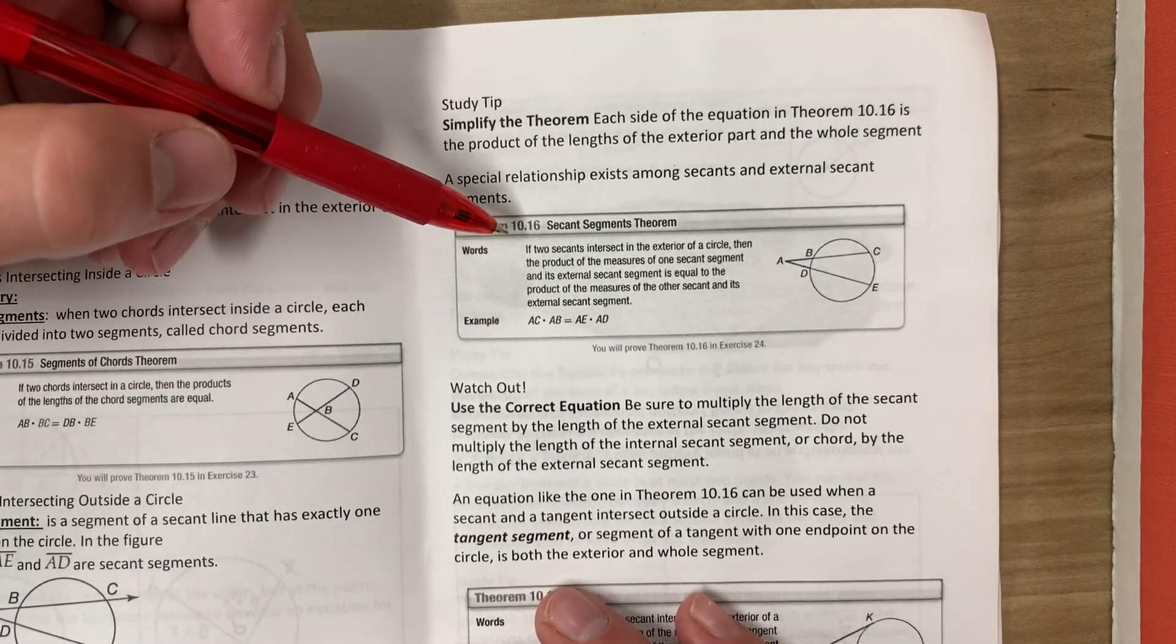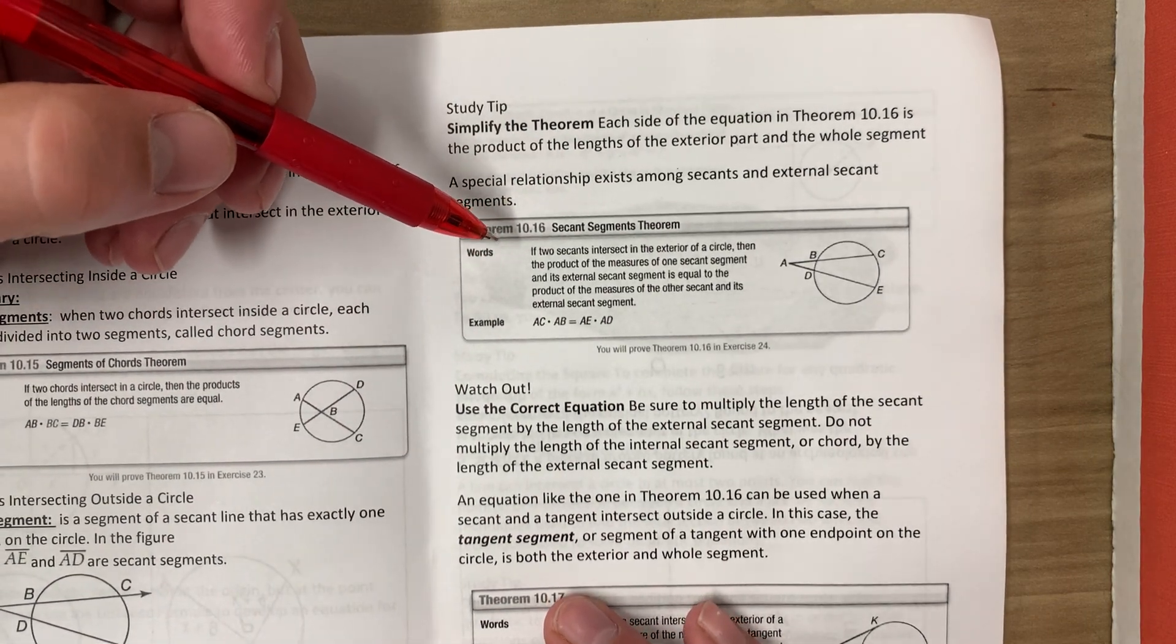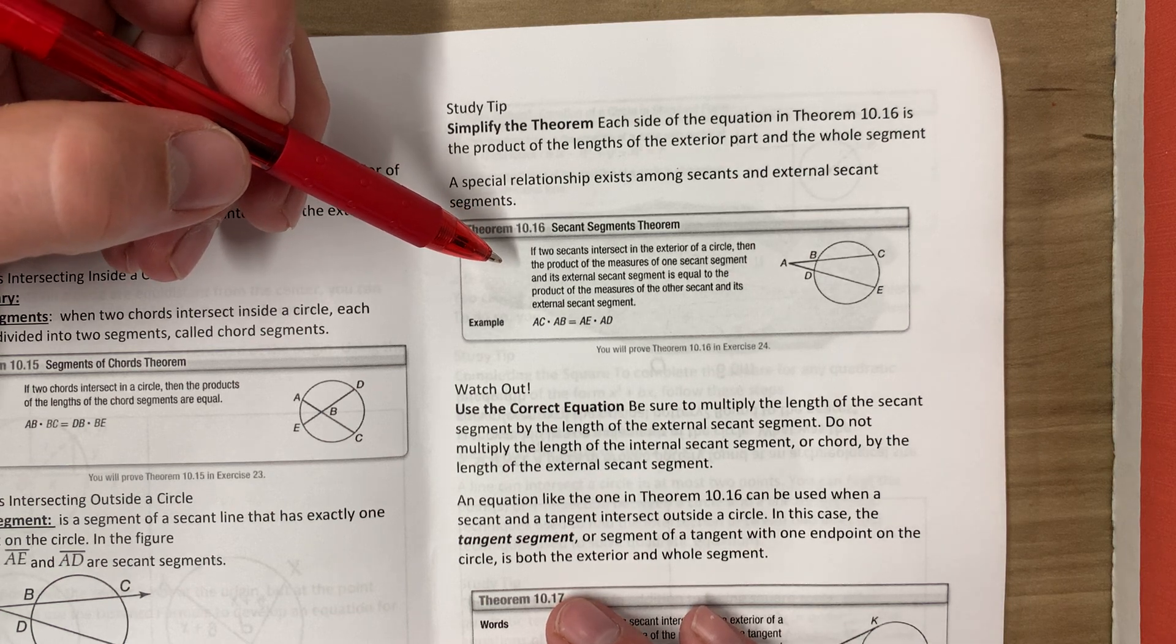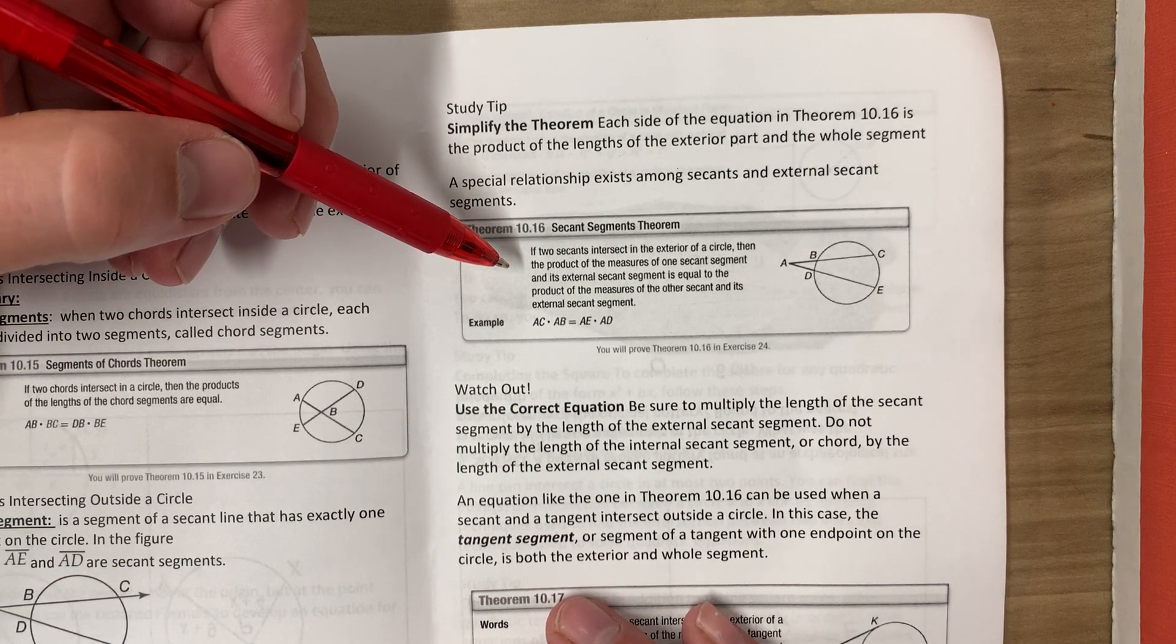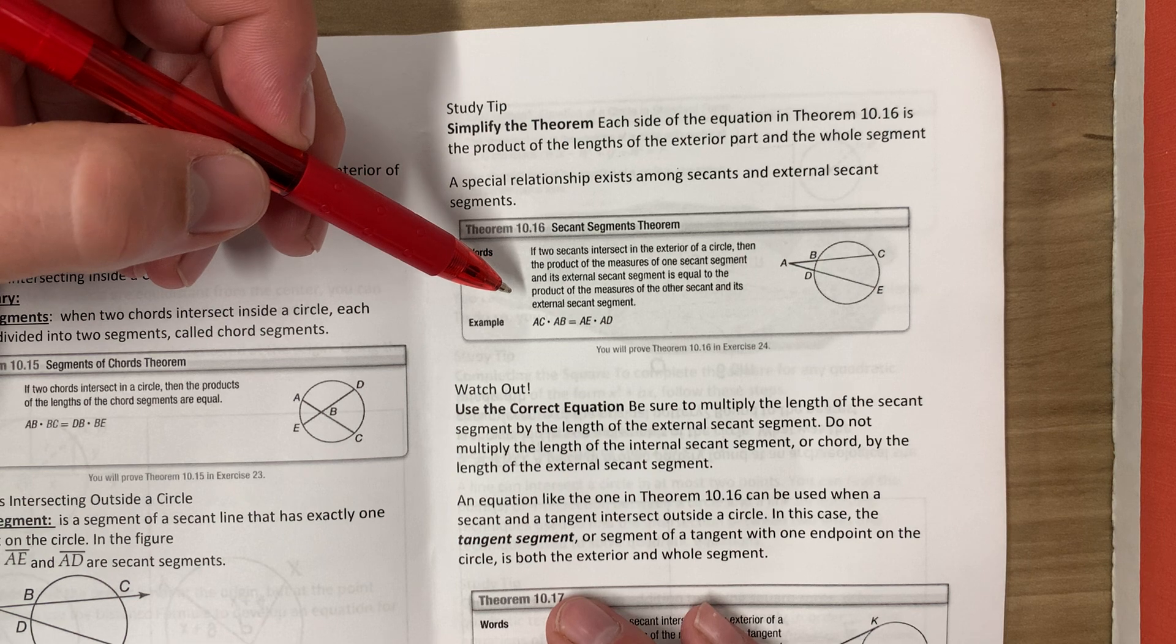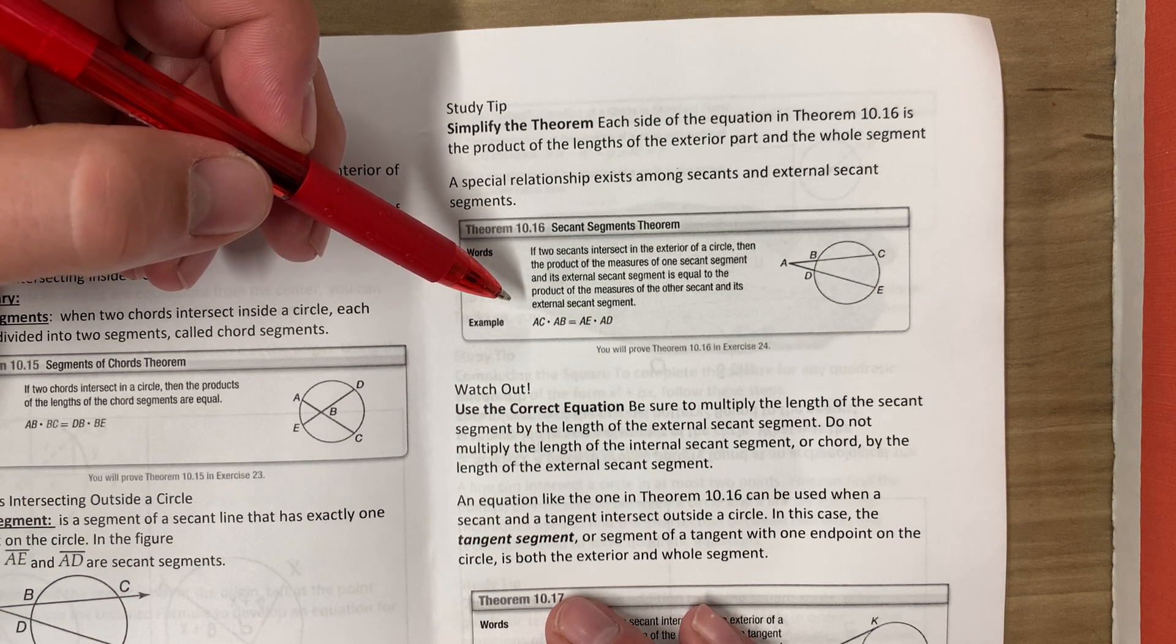So, Theorem 10.16: if two secants intersect in the exterior of a circle, then the product of the measure of one secant segment and its external secant segment is equal to the product of the measures of the other secant and its external secant segment.